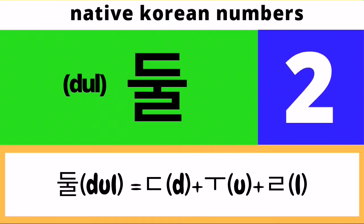To spell Tul in Hangul, we need to draw first a Nieun character followed by a U character, followed by a Rieul character.